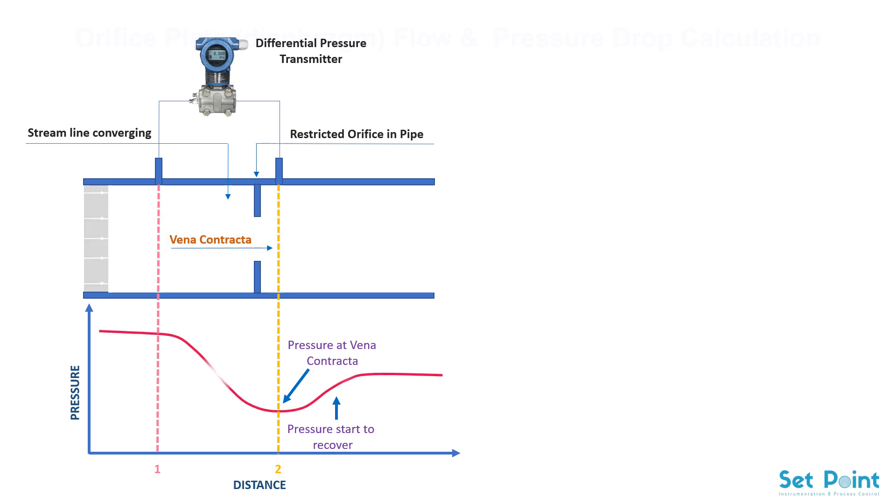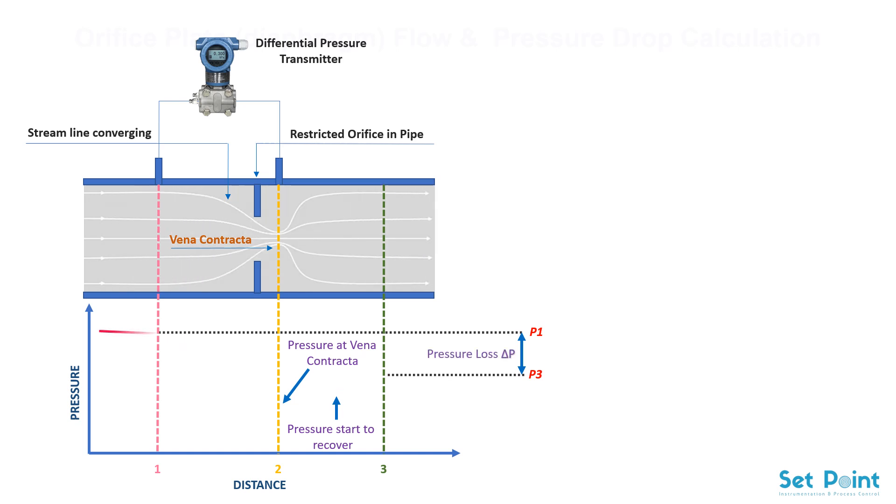The pressure at section 3 is always less than pressure at section 1. The pressure difference between sections 1 and 3 is non-recoverable and known as permanent pressure loss. Pressure difference between section 2 at vena contracta and section 3 is known as pressure recovery.